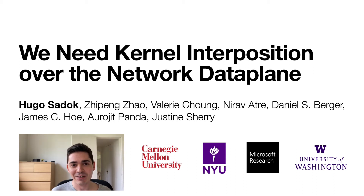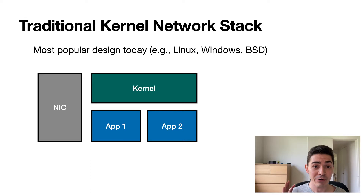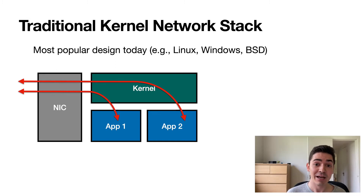Hello, my name is Hugo and today I'm going to talk about why we need kernel interposition over the network data plane. Most of you are probably familiar with how a traditional kernel network stack works. In this model, the kernel sits between the NIC and applications and is responsible for mediating all the data transfers to the network.